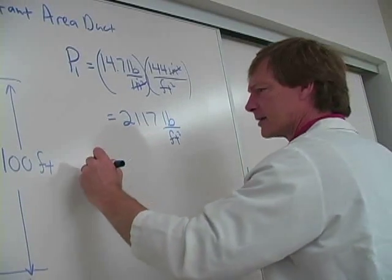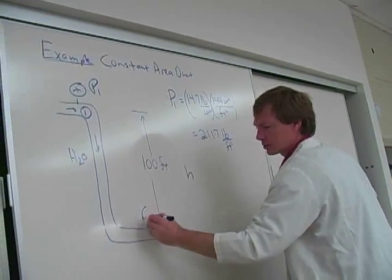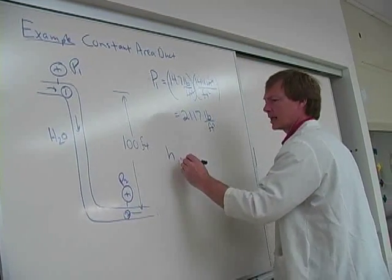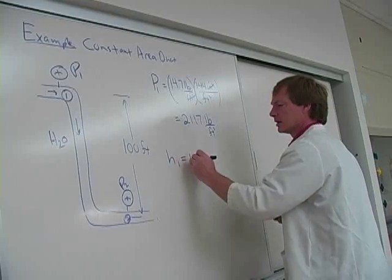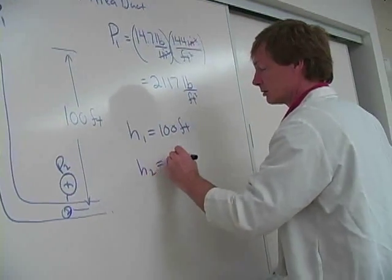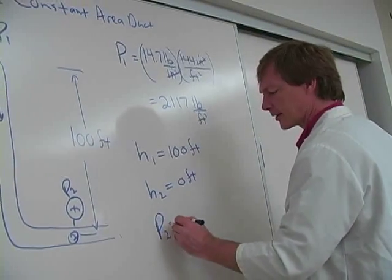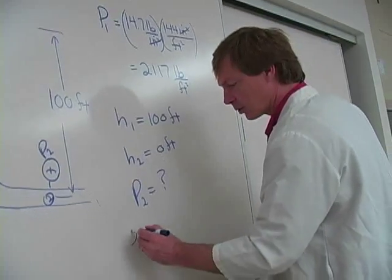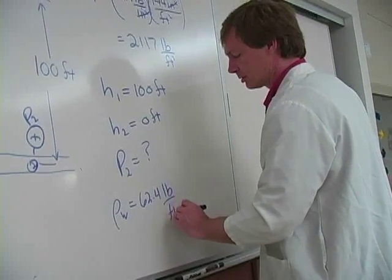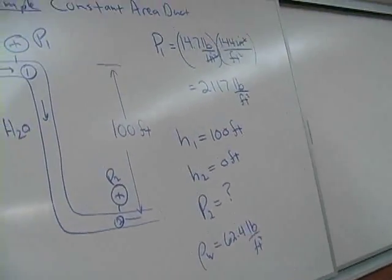And let's say I've got a height. This is H1. This is set 1. This is 2. I'll have a measure of pressure down there. And H1 is 100 feet. But I set it up so H2 down here is 0 feet. And I want to know what's the pressure down there. The weight density of water is 62.4 pounds per cubic foot. So this is the whole setup. You can pause it and write it down if you want.